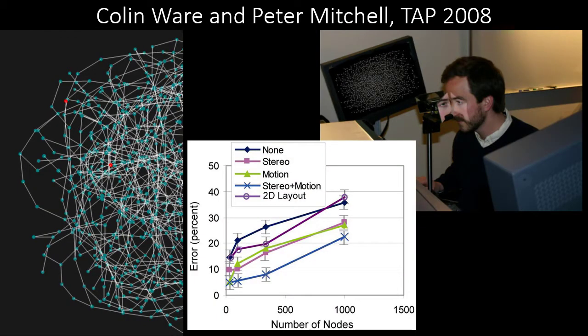Our first study extends previous work by Ware and Mitchell. They found that a stereo projection of a 3D layout combined with motion cues allowed users to find shortest paths with fewer errors. In their work, edges were drawn as straight line segments and users had no control over their perspective view and could not interact with the network.